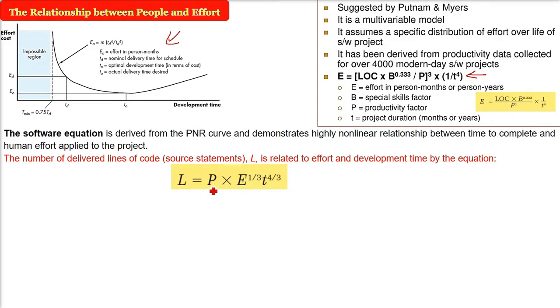So now the number of delivered lines of code, the source statements L, is related to the effort and development time by this equation we have already seen: L equals P into E raise 1 by 3, T raise 4 by 3.